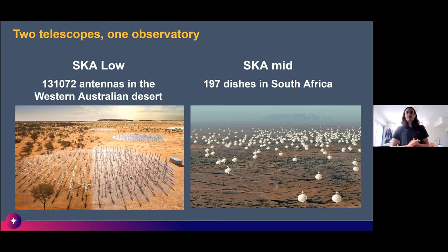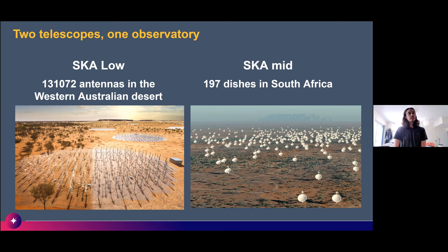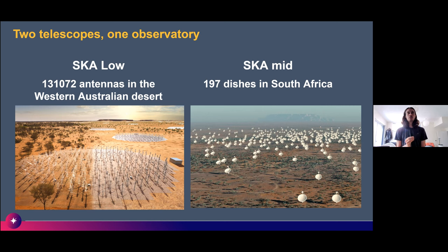A quick introduction to the SKA — probably many of you have heard of it already. It's one observatory with two telescopes: one based in the Western Australian desert, SKA-Low, operating at low frequencies with many antennas. Then SKA-Mid, looking at slightly higher frequencies, with hundreds of dishes in the South African desert. These are the most recent numbers, though they have been prone to changing.